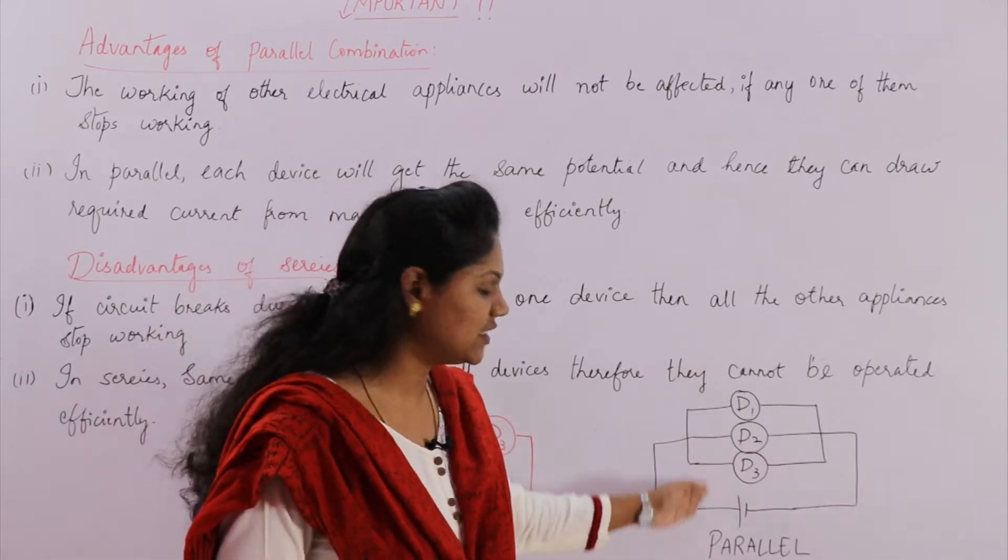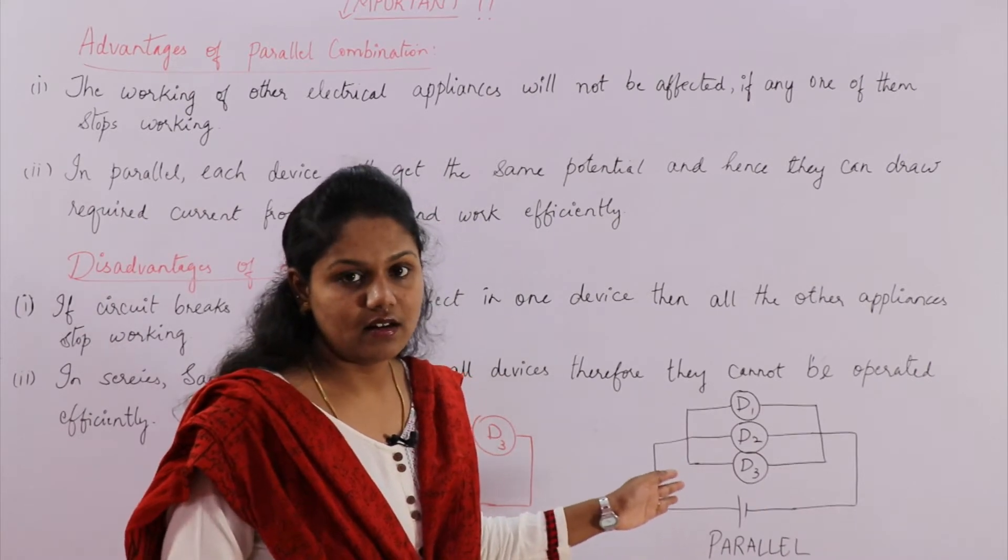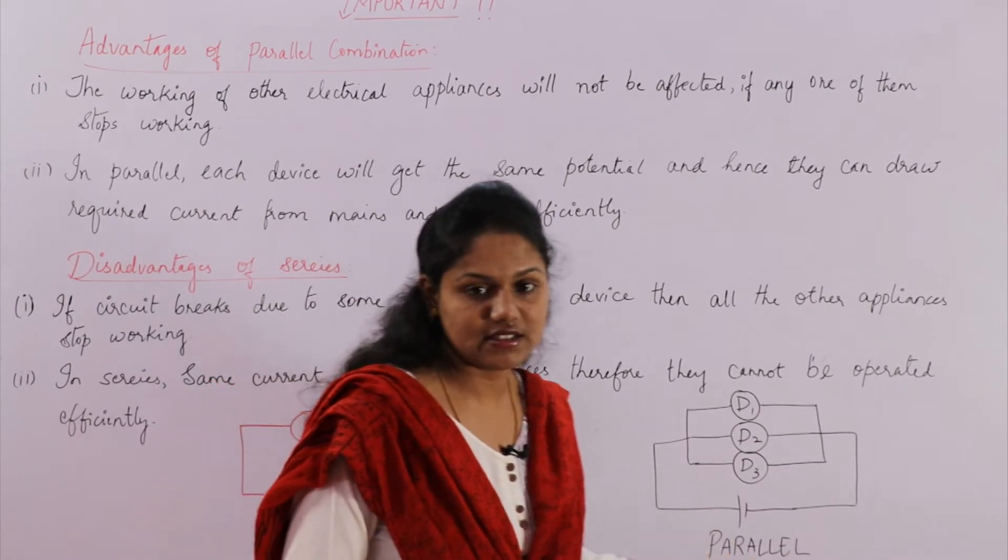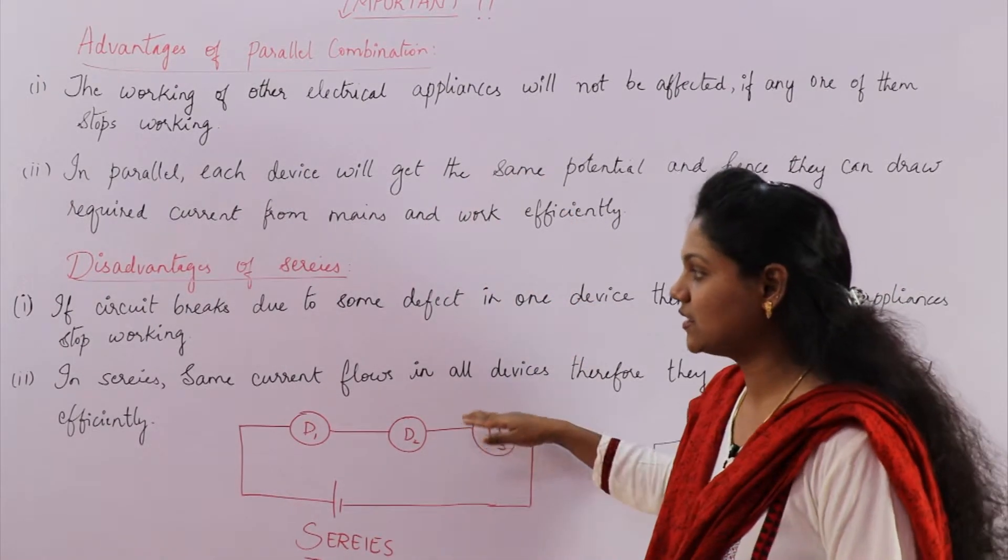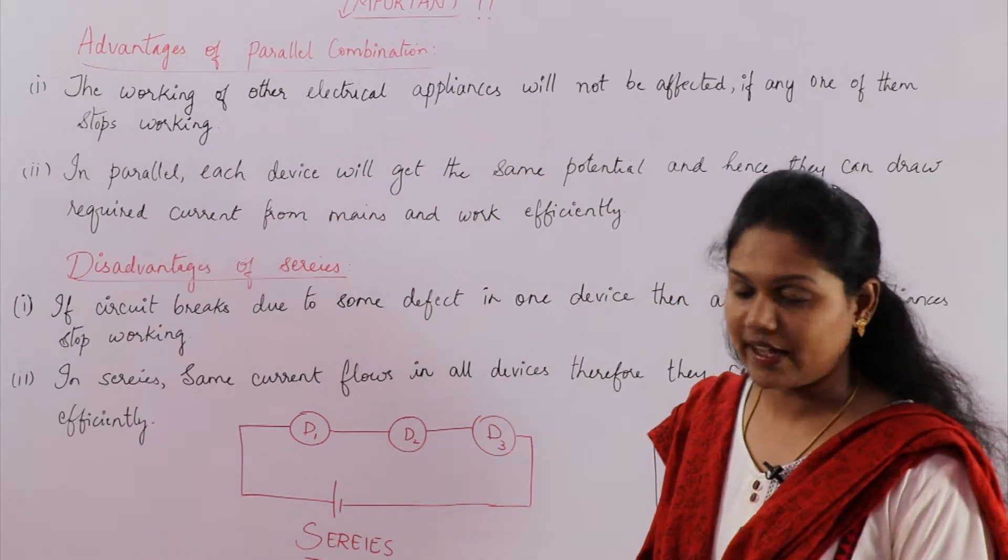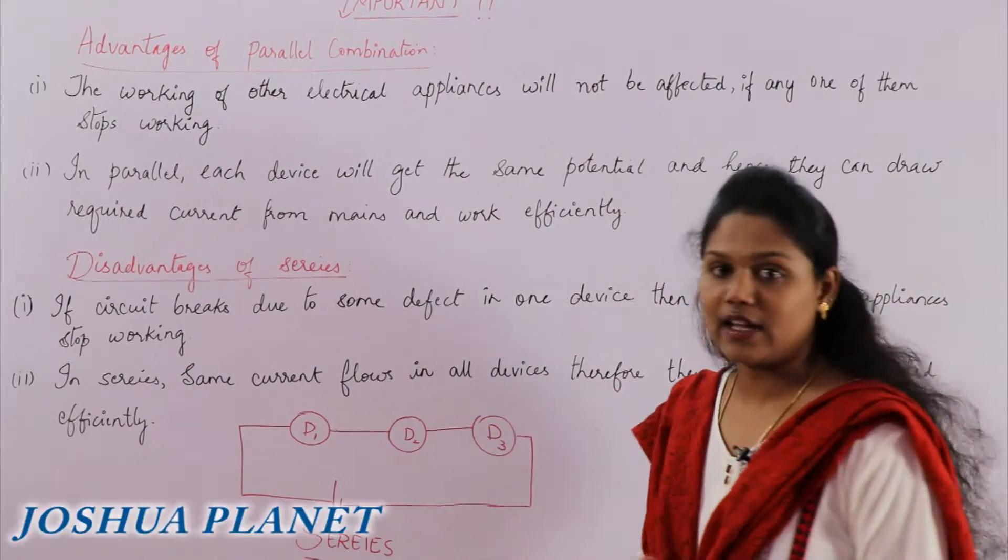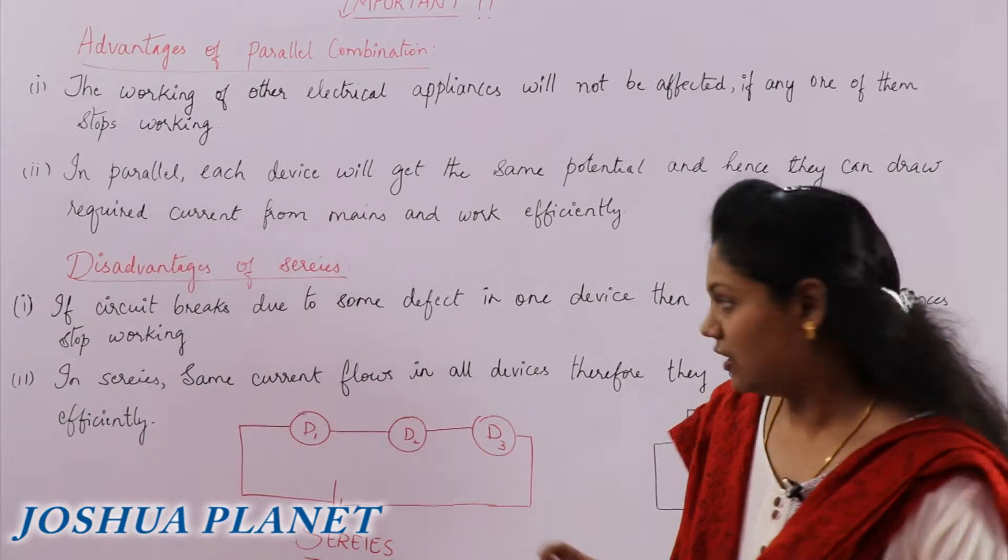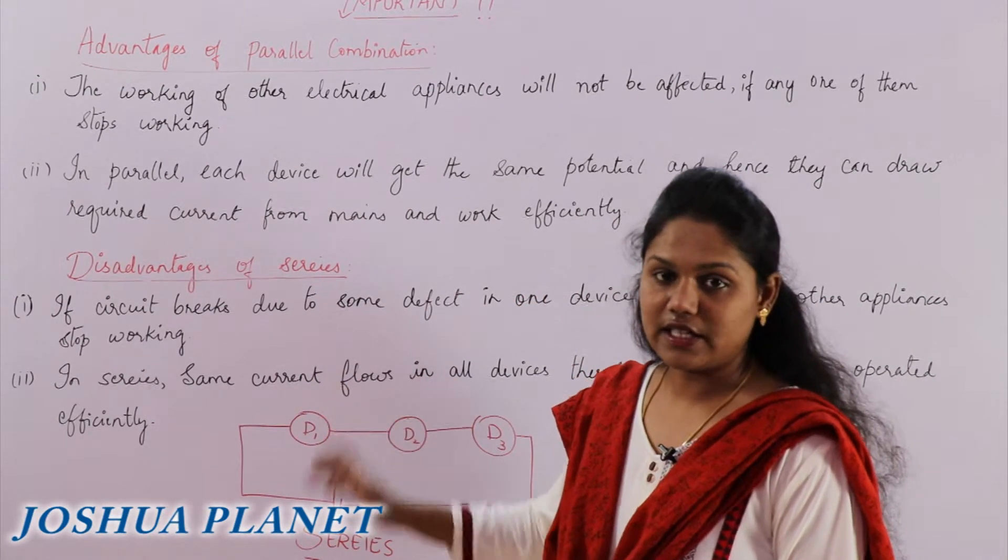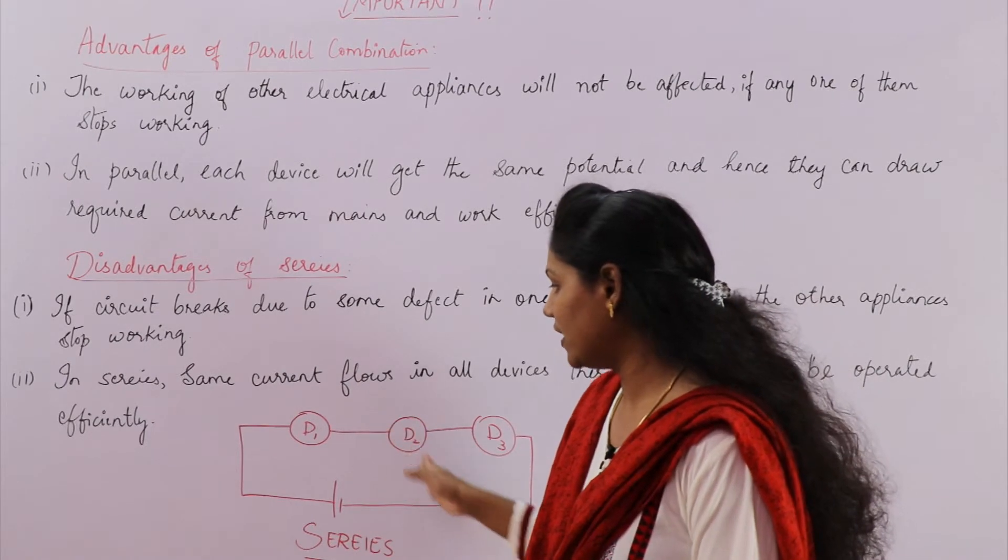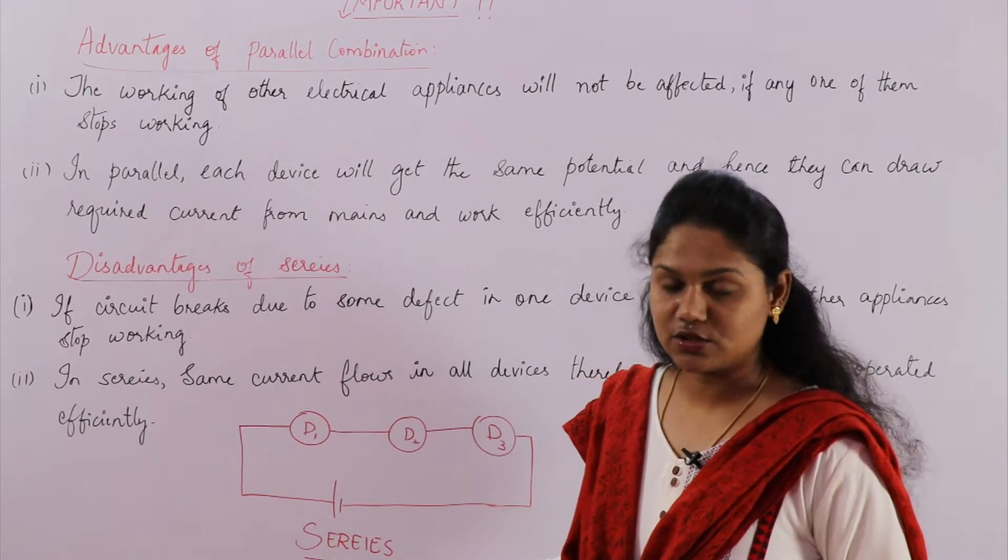So therefore, operation of these three will be easy. Therefore, work also will be efficient by these devices. Whereas when you take the series disadvantages, the same point is written in series as disadvantage, that is same current flows in all the devices. Therefore, they cannot operate efficiently. Since the same current, again the first point also tells the same. So if the current or the device is broken down, the same current is not flowing in all the devices.